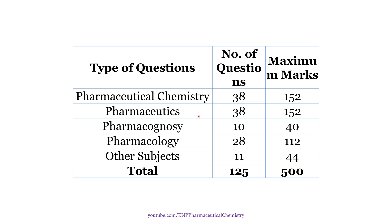Pharmaceutics has equal weightage to pharmaceutical chemistry — 38 questions and 152 marks. Pharmacognosy: 10 questions, 40 marks. Pharmacology: 28 questions, 112 marks. Other subjects such as drug store management, pharmaceutical jurisprudence, and biotechnology together account for 11 questions carrying 44 marks. In total, there are 125 questions making up 500 marks.